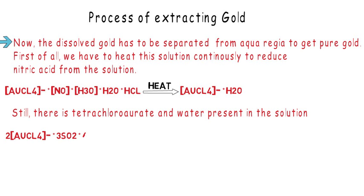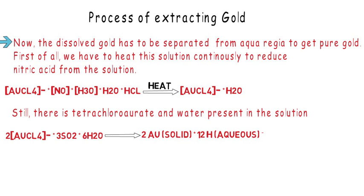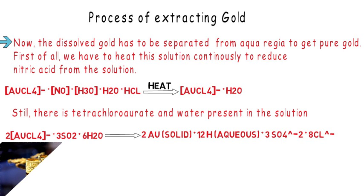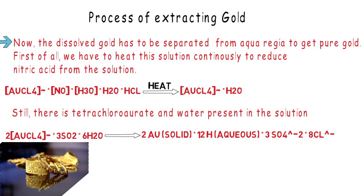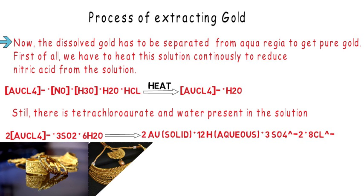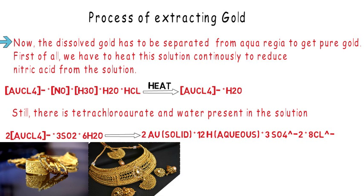The reaction is: 2AuCl4⁻ (tetrachloroaurate ion) + 3SO2 (gas) + 6H2O (liquid) → 2Au (gold, solid) + 12H⁺ (aqueous) + 3SO4²⁻ (aqueous) + 8Cl⁻ (aqueous). Now pure gold is ready to be used to make different shapes of ornaments.